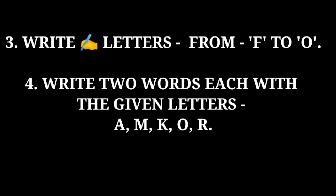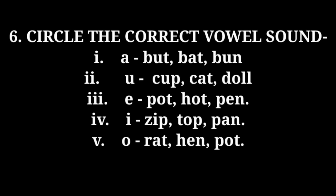Complete till question four. Question five: write one word with U sound and one with A sound — you have learnt those words, so write them down. Now question number six: circle the correct vowel sound. I have given five questions. First one is letter A — the words given are: butt, bat, bun. You have learnt the A sound — circle the correct answer.